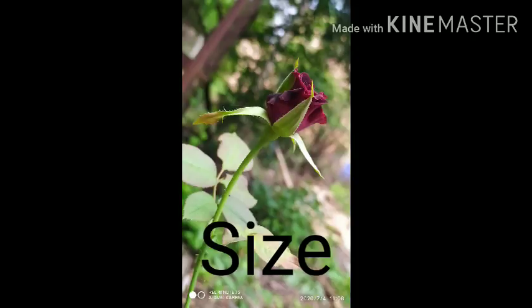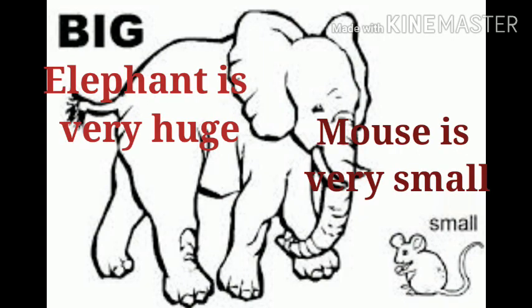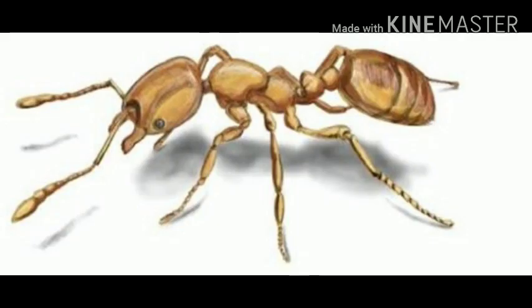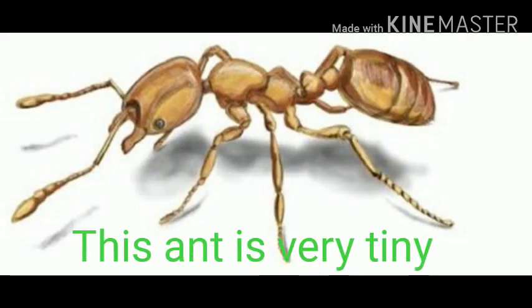Next comes size. Elephant is very huge and the mouse is very small. Here huge and small are adjectives. This pond is very big. Big is a quantity. This ant is very tiny. That is a size. Tiny is an adjective.